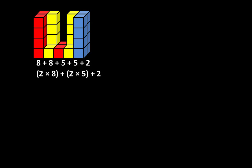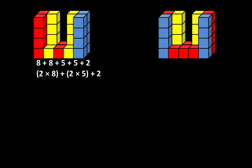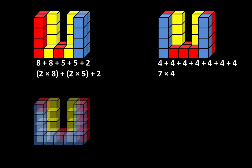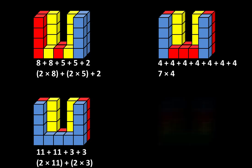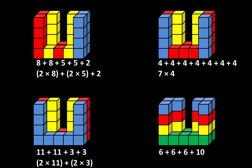Let's take a second look at how the structures were broken apart. Almost every time we find there is more than one way to describe what we see. The first structure can be described as 8+8+5+5+2, or as two groups of eight plus two groups of five plus two. The second as 4+4+4+4+4+4+4, or 7 groups of 4. The third as 11+11+3+3, or 2 groups of 11 plus 2 groups of 3. The fourth as 6+6+6+10, or 3 groups of 6 plus 10. In every case, the total is 28.